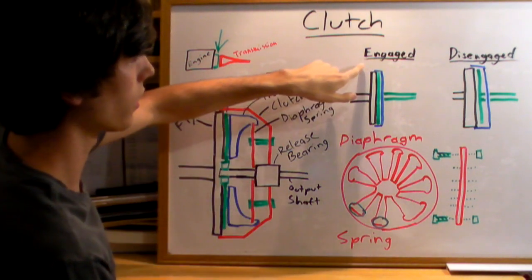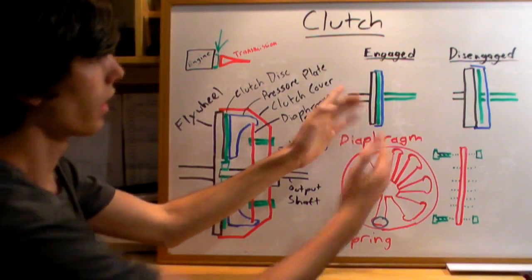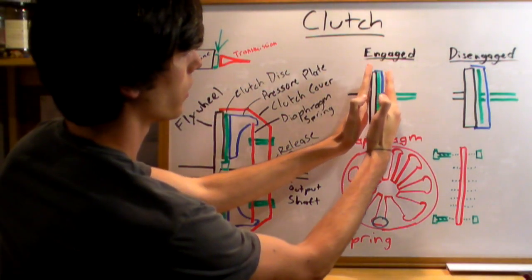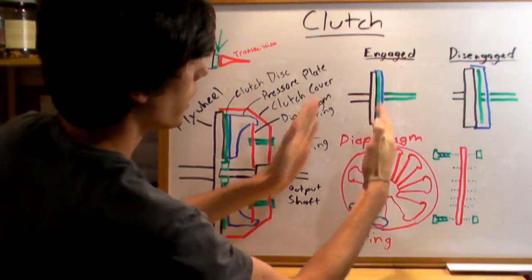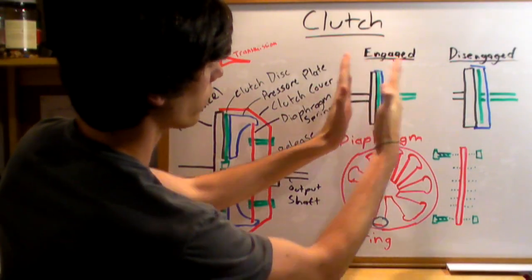So here's what it looks like when you let go of your clutch pedal. It's going to squeeze the pressure plate onto the flywheel. The clutch is going to be in between, sandwiched in there.